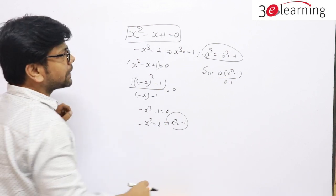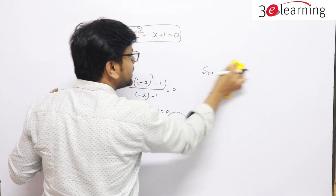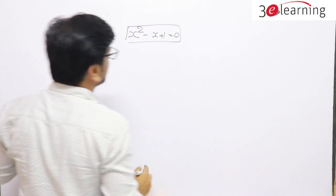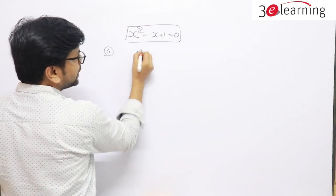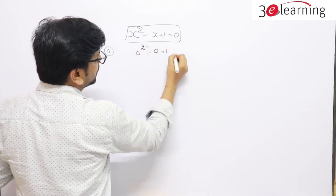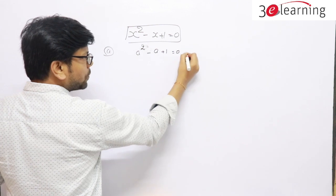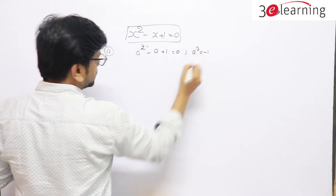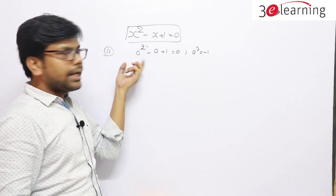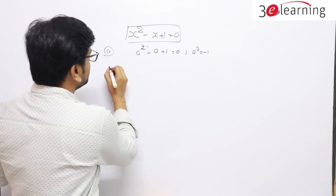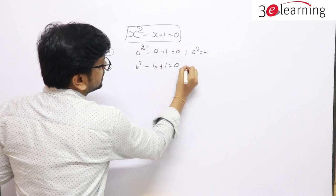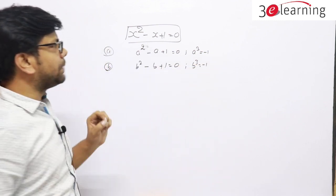Let me write all the concepts you should know. If the roots of x² - x + 1 = 0 are a and b, then since a is a root, a² - a + 1 = 0, and from our derivation a³ = -1. Similarly, since b is also a root, b² - b + 1 = 0, and b³ = -1 as well.